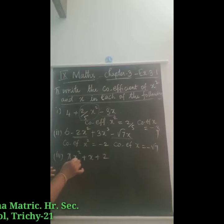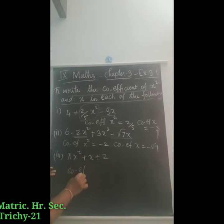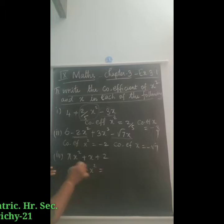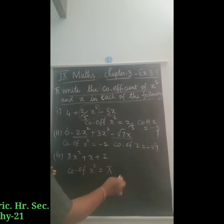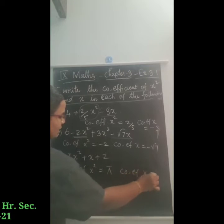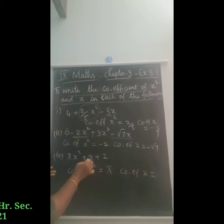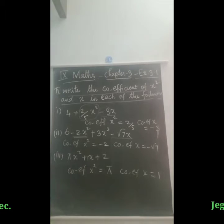Next one: pi x squared plus x plus 2. The coefficient of x squared is equal to pi. Where there is no explicit coefficient written for x, you write 1, so the coefficient of x is equal to 1.